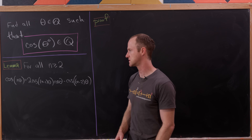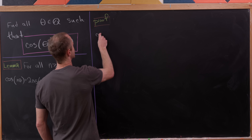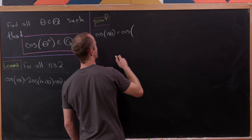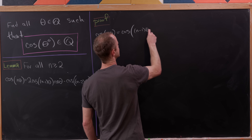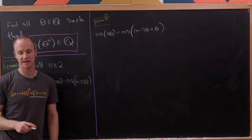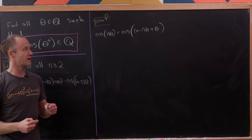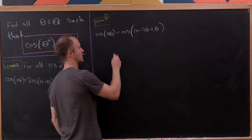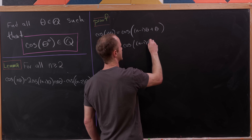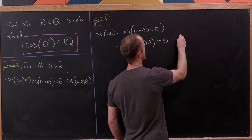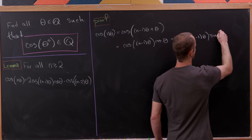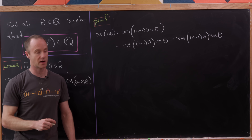Now let's jump into the proof. Starting with the left-hand side, we have cos(nθ), which we write as cos((n−1)θ + θ), decomposing n as (n−1) + 1. From here, we use the angle sum formula for cosine, giving us cos((n−1)θ)·cos(θ) minus sin((n−1)θ)·sin(θ).